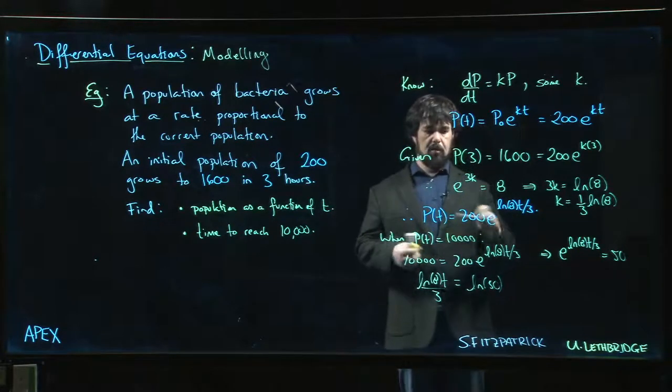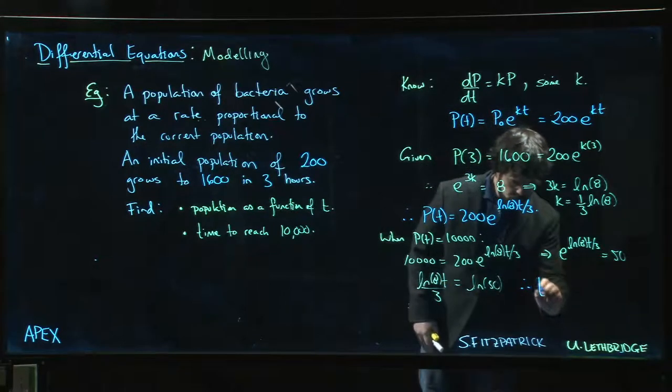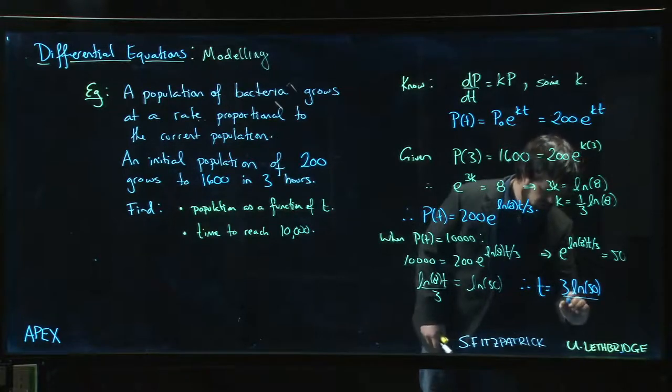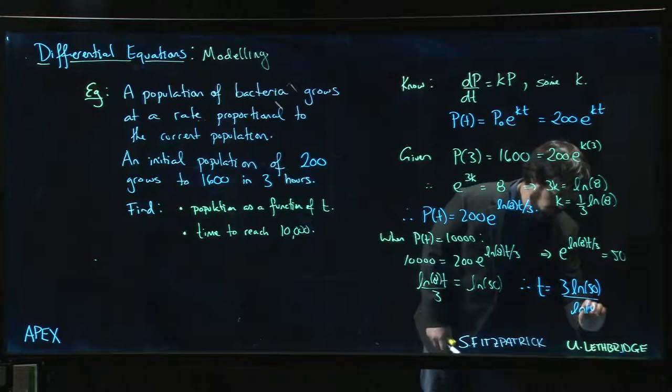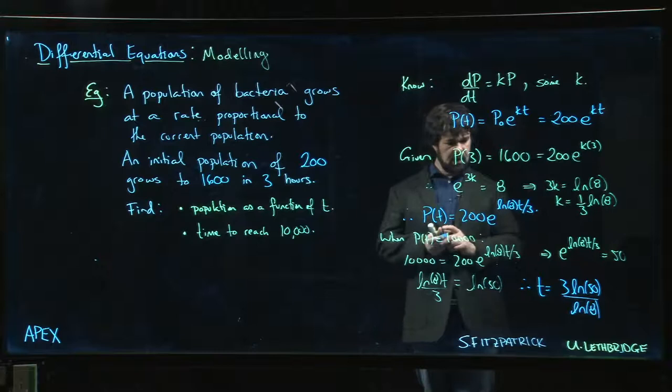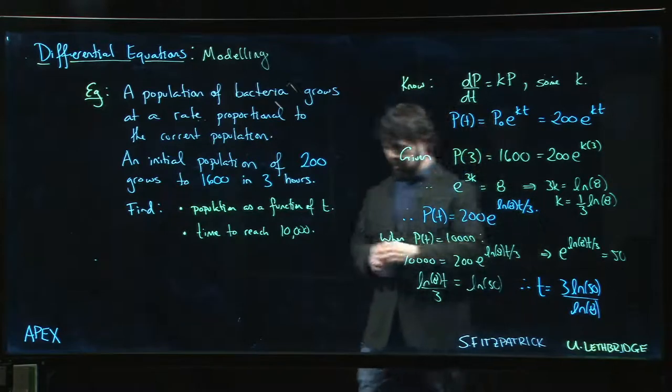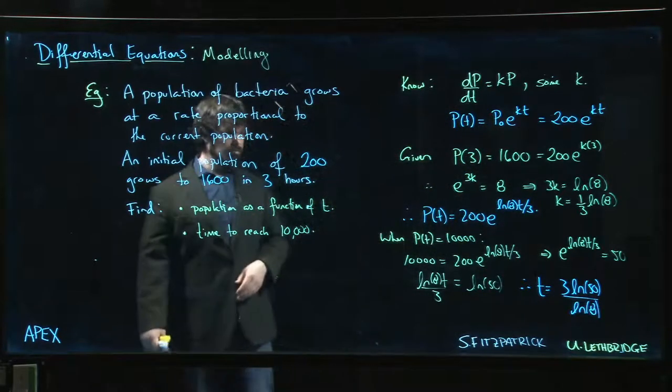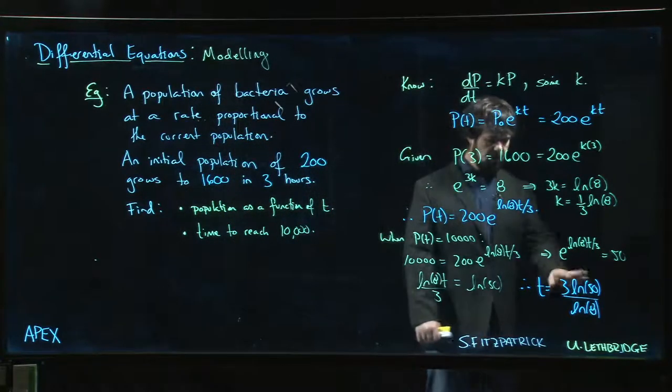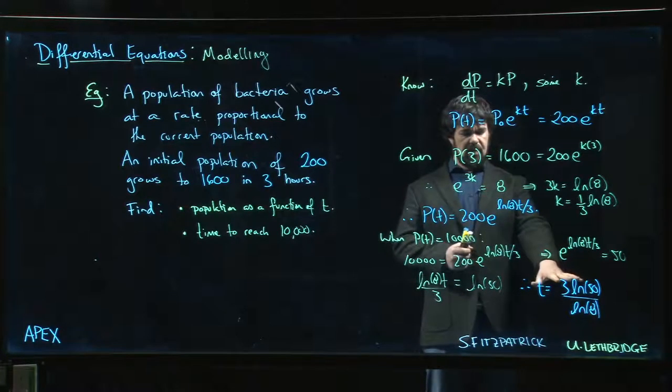Okay, so now we have our answer. t is equal to 3 times the natural log of 50 divided by the natural log of 8, and that's the quantity that you want to put into your calculator. The textbook has a value—it's like about 5.6 or something, measured in hours. I think that's right, so somewhere around five and a half hours you hit 10,000.